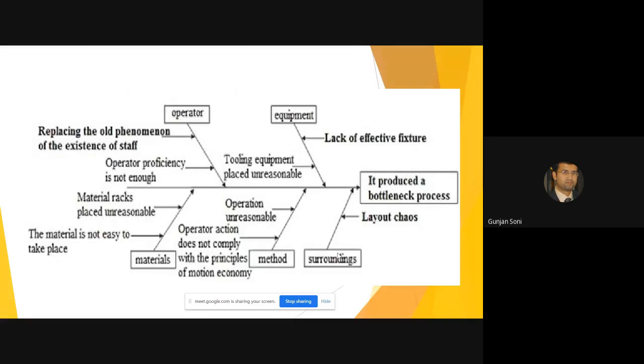You can say that layout is chaotic could be one cause. Then you have lack of efficient fixture, tooling equipment placed unreasonably. Method could be operational unreasonable or operator action does not comply with the principles of motion economy. Operator proficiency is not enough. Materials could be material racks placed at unreasonable locations.